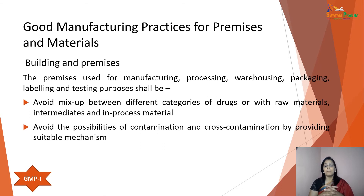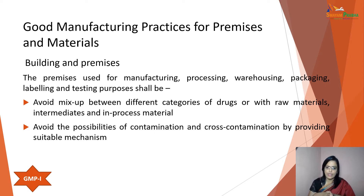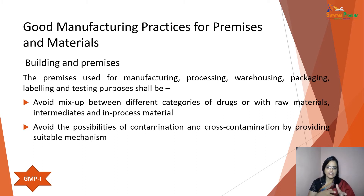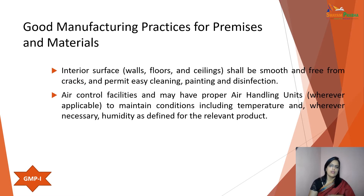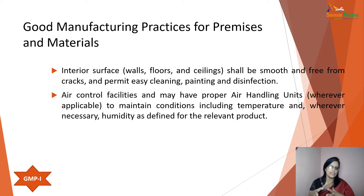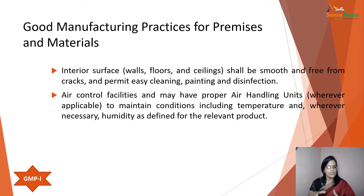Next is building and premises. For manufacturing, processing, warehousing, packaging, labeling and testing purposes, the building should be compatible with drug operations and adequately provided with working space to allow orderly and logical placement of equipment, material and movement of persons. The manufacturing area should be designed, constructed and maintained to prevent the entry of insects, pests, birds, vermin and rodents. Air conditioning should be provided in areas where operations and dosage forms under production take place.